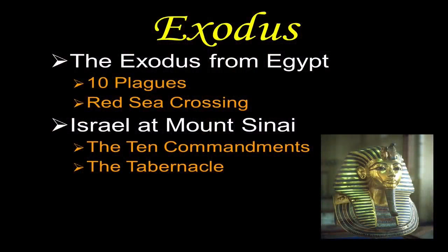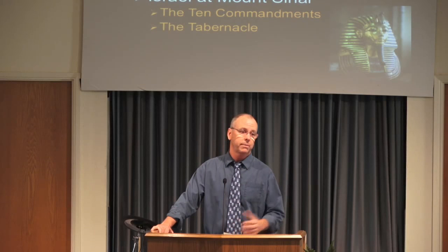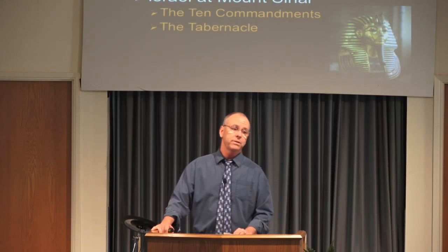That takes us to the book of Exodus, where as the children of Israel continued to grow, the Pharaoh became concerned and made them slaves. They were slaves in Egypt for hundreds of years, cried out to God, and God sent them a deliverer named Moses. Through a series of ten plagues, they came out of Egypt through the miraculous crossing of the Red Sea, came to Mount Sinai, where they entered into covenant with God — the Old Covenant, recorded in our Old Testament. There Moses received the Law, including the Ten Commandments and instructions for the tabernacle, this portable worship sanctuary.